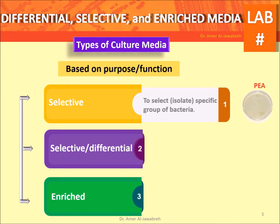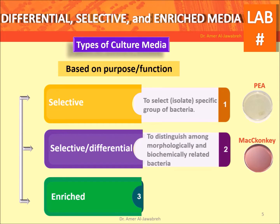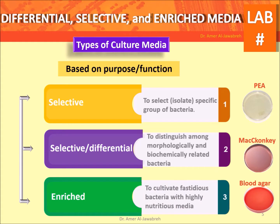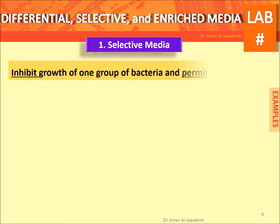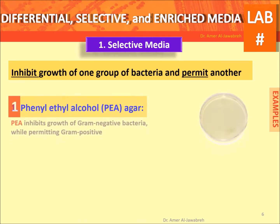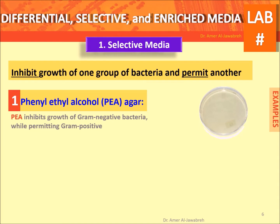Types of cultural media based on purpose or function. Selective: to isolate a specific group of bacteria. Selective differential: to distinguish among morphologically and biochemically related bacteria. Selective media inhibit the growth of one group of bacteria and permit another. Example: phenyl ethyl alcohol agar inhibits gram-negative and permits gram-positive bacteria.